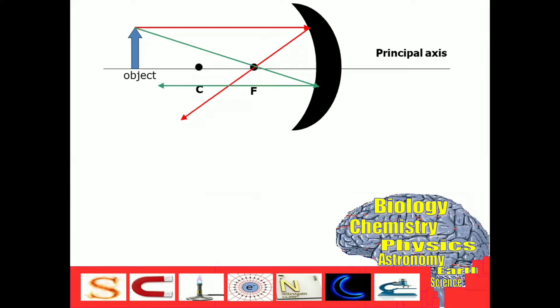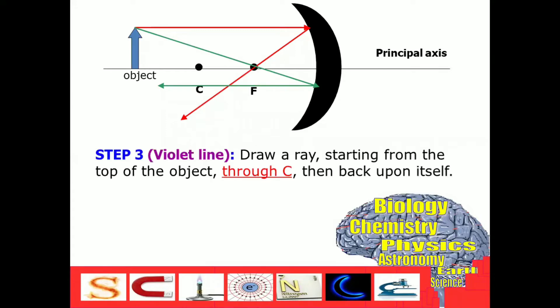And lastly, draw a ray starting from the top of the object, through C. Then, back upon itself. That's why, if you can see, we have an arrowhead here, and on the other end, representing that it back upon itself. And these are the three basic steps in drawing the ray diagram for concave mirror.